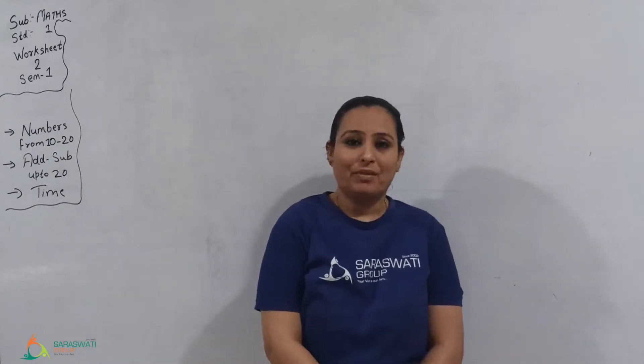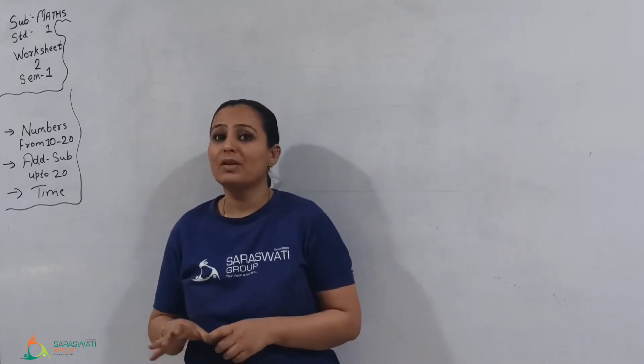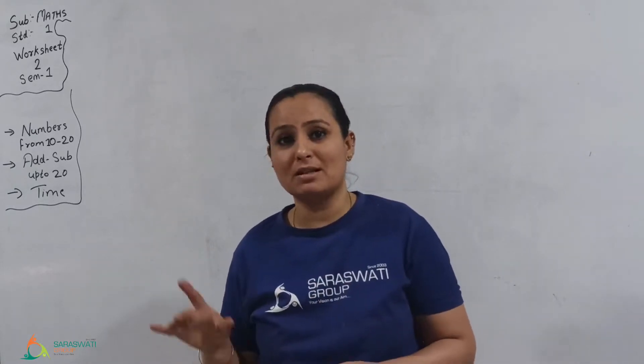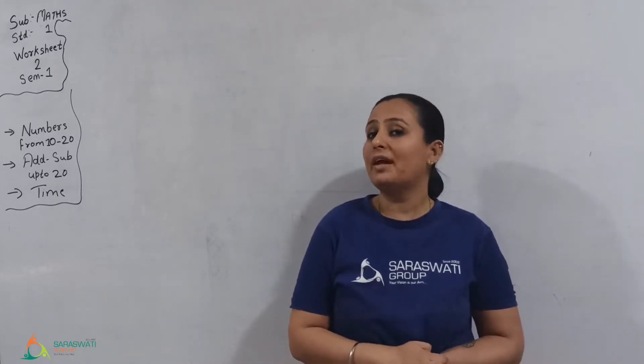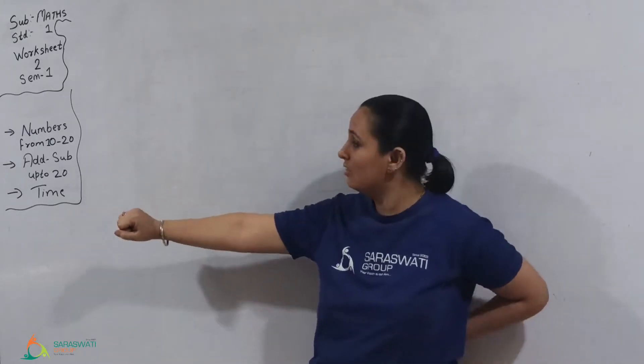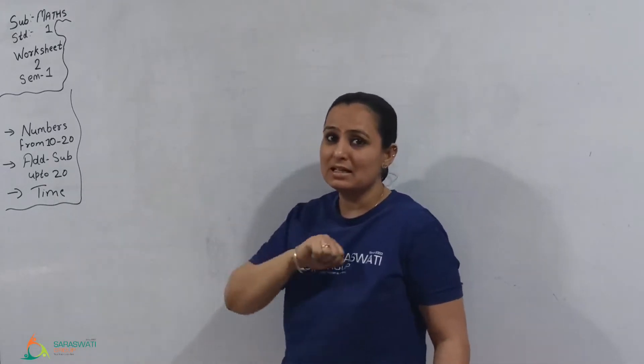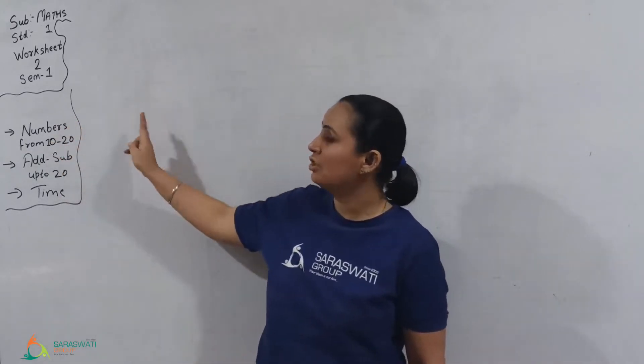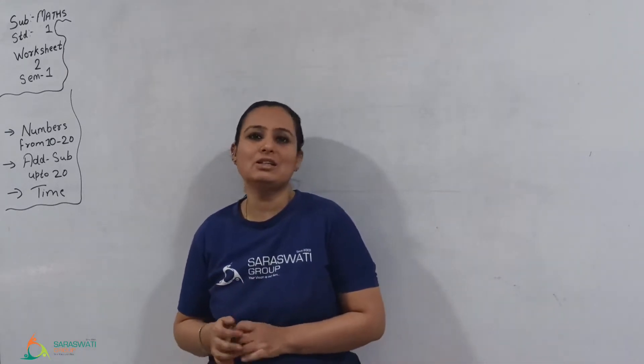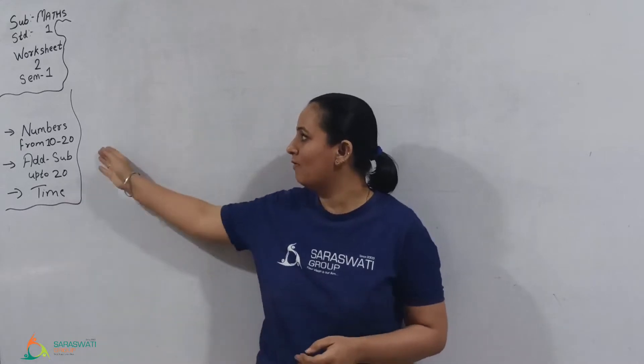Why? Because today we are going to take the rest 3 chapters of SAM 1. In our previous lecture, we have done a recap of chapters 1, 2 and 3. Today we are going to do a recap of chapter number 4, 5 and 6. Chapter number 4 is numbers from 10 to 20, chapter number 5 is addition and subtraction up to 20, and chapter number 6 is time. So these three chapters are covered in worksheet 2, and with this you will get a quick revision.